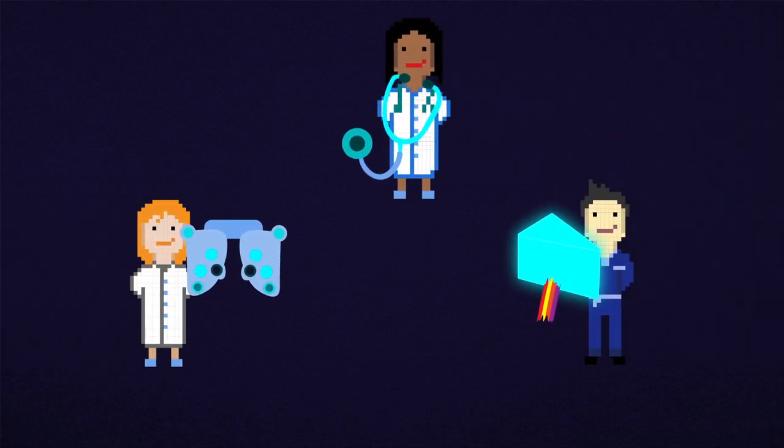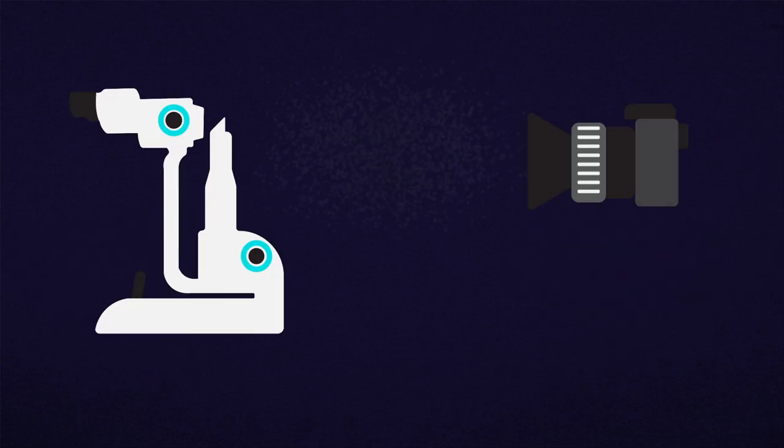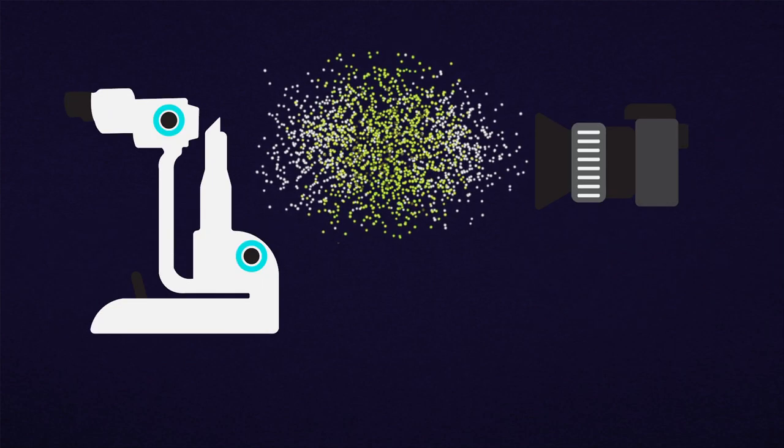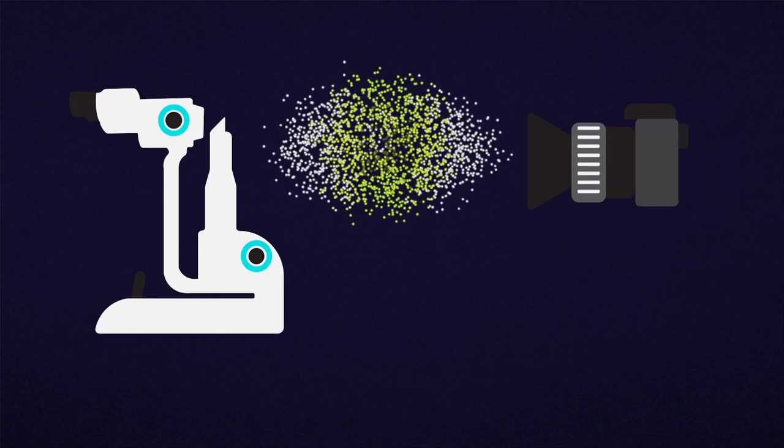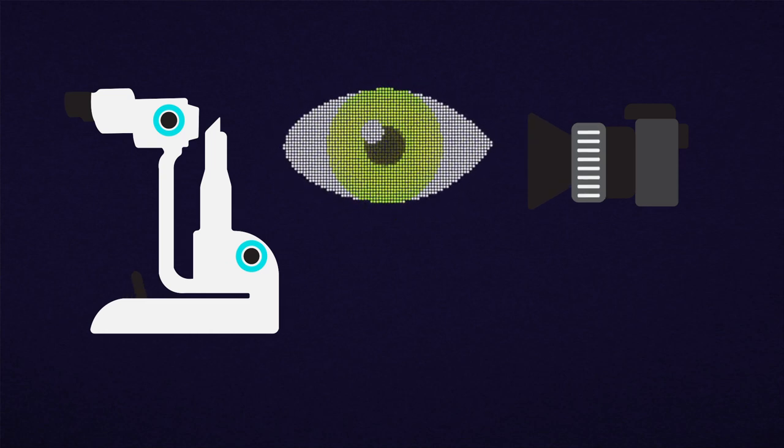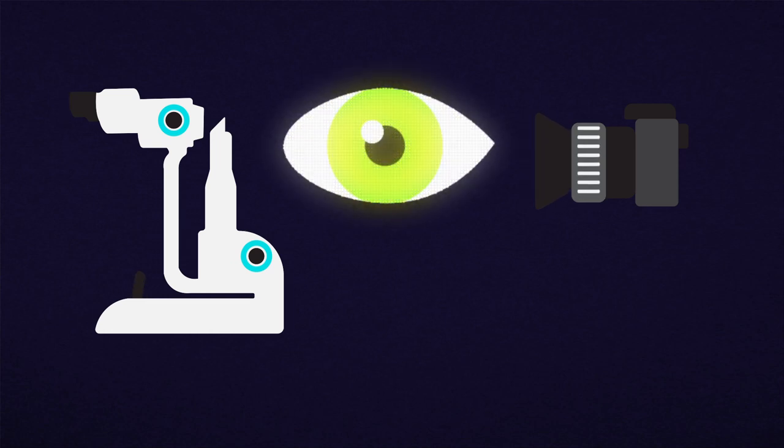Optometrists, ophthalmologists and orthoptists are health professionals who can check how good your vision is. Using special microscopes and sophisticated cameras, they get a full picture of the thousands of tiny cells that make up different parts of your eyes.